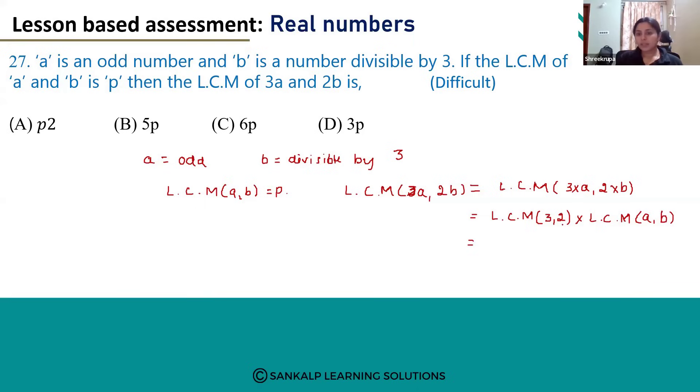LCM of 3 and 2 is 6, because if we take the LCM of 3 and 2, we cannot divide 3 by any other number but the number itself. So we have to use 3 here, and 2 cannot be divided by 3, so we have to use 2. So the LCM will become 3 into 2. We will get 6 as the answer.